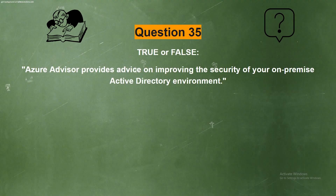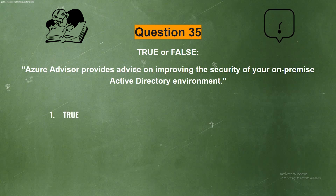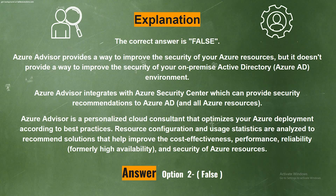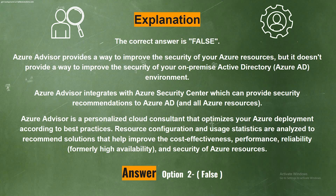Question 35, true or false: Azure Advisor provides advice on improving the security of your on-premise Active Directory environment. The options are option one, true; option two, false. The correct answer is option two, false. Azure Advisor provides a way to improve the security of your Azure resources, but it doesn't provide a way to improve the security of your on-premise Active Directory environment.